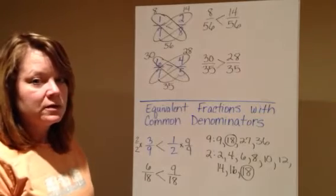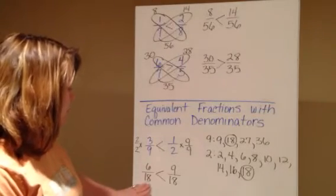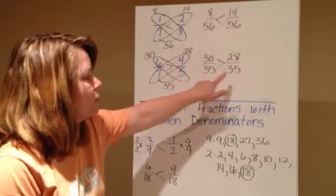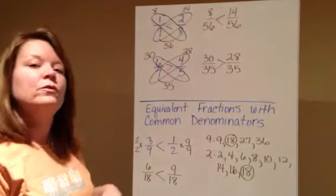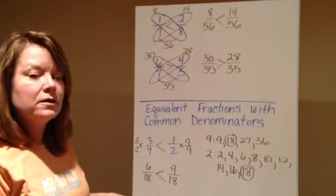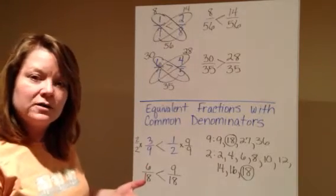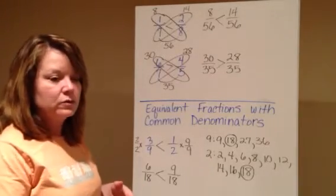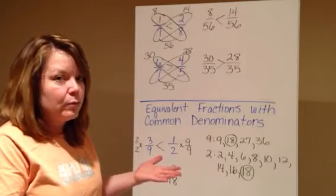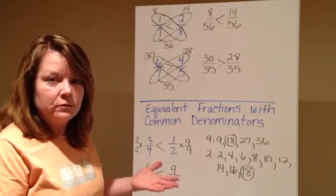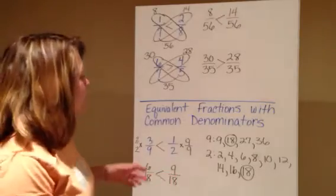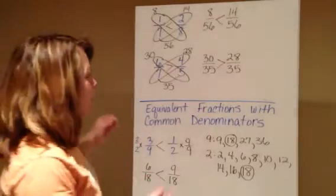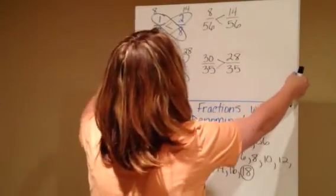Kind of doing the same thing that we did with the butterfly method, just a little different. We still come up with two fractions that have the same denominator, just like we did with the butterfly method. It's hard to compare things when they are not the same. We talked about in class how you can't compare an apple to a steak because they're not the same. You can compare an apple to an apple. So with fractions, we have to have the same denominator to compare them.